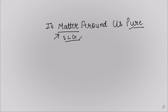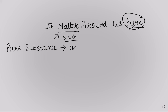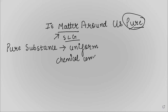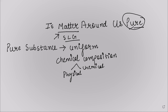Let's understand what pure substances are. Pure, as the name suggests, means everything in that substance will be similar and uniform. Pure substances have definite chemical compositions because of their uniformity, and if they have a definite chemical composition, they must also have definite physical and chemical properties. So they are all homogeneous.